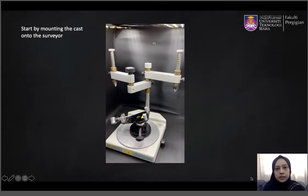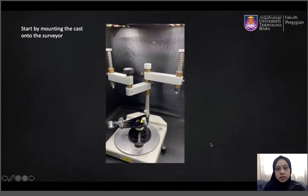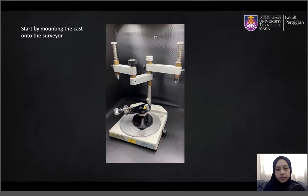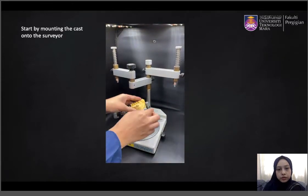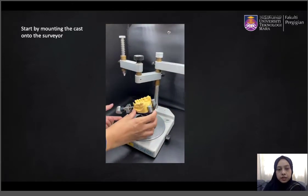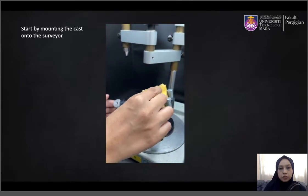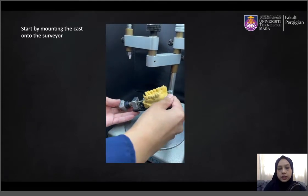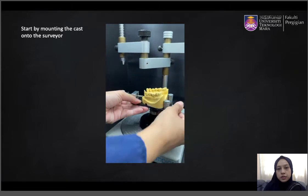You start by mounting the cast onto a surveyor. This is the dental surveyor. Put your cast on the surveyor table and secure it — make sure it doesn't move. Then change the tilt for it to be zero tilt.